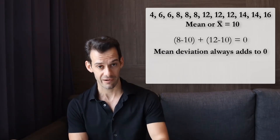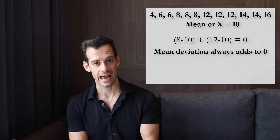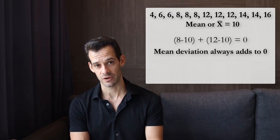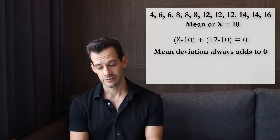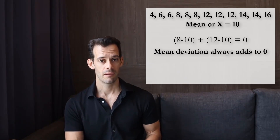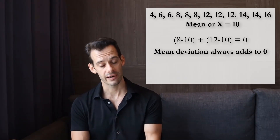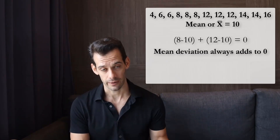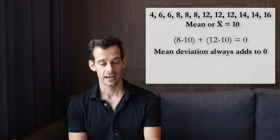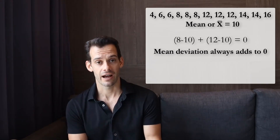This is more obvious with a perfectly symmetrical distribution because every score above the mean has a counterpart below the mean. But even in an asymmetrical distribution the mean is the balancing point. If you have one extremely high score it pulls the mean in that direction, but then you have more scores below the mean that cancel out that high score. So no matter what we do we'll get a mean deviation of 0, which means we can't divide by our number of scores — we basically have a useless statistic.